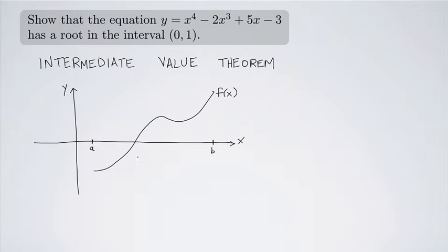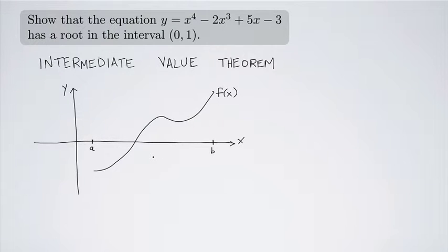If we have a continuous function on a closed interval [a, b], and if we know that the value of the function is positive on one end of the interval and negative on the other end, then it must have crossed the axis at least once. It might have crossed more than once, but it had to cross at least once to get from one side to the other.